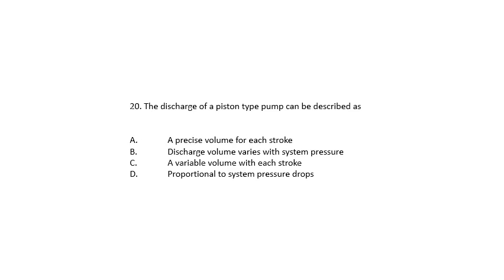Question 20. The discharge of a piston-type pump can be described as a precise volume for each stroke, discharge volume varies with system pressure, a variable volume with each stroke, or proportional to system pressure drops. The discharge of a piston-type pump can be described as a precise volume for each stroke.